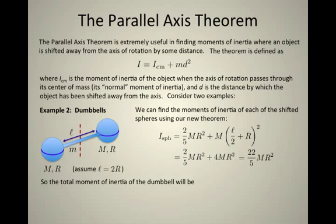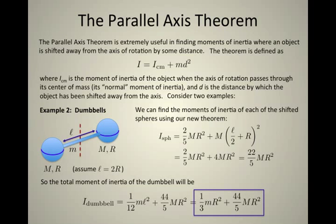Of course, the total moment of inertia for the dumbbell is two of these plus the moment of inertia of the rod itself. So that's 1/12 mL squared for the rod, plus 44/5 mR squared. If I remember what L is, that turns out to be 1/3 little m R squared, where m is the mass of the rod, and plus 44/5 capital M R squared, where capital M is the mass of the ball.